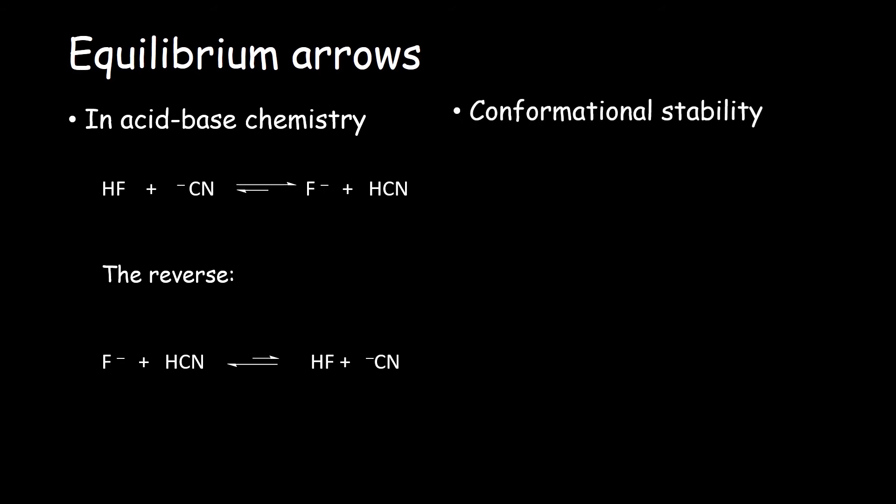The other example is conformational stability. This is in Chapter 3 of Ogilvy's mechanistic pattern, and as you can see, the equilibrium favors the conformer that is more stable.